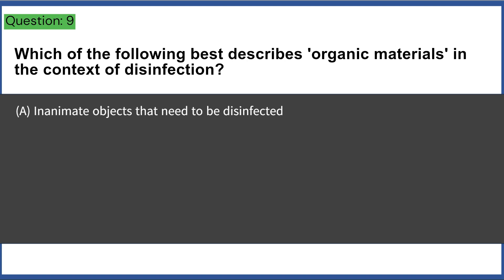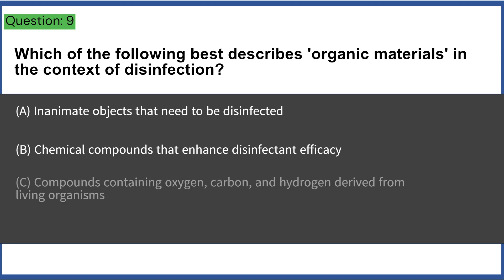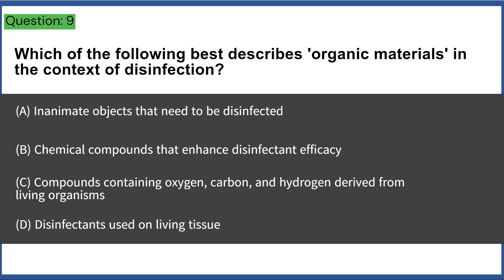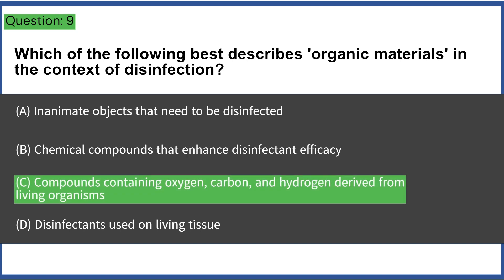Which of the following best describes organic materials in the context of disinfection? a) inanimate objects that need to be disinfected, b) chemical compounds that enhance disinfectant efficacy, c) compounds containing oxygen, carbon, and hydrogen derived from living organisms, d) disinfectants used on living tissue. Answer: C, compounds containing oxygen, carbon, and hydrogen derived from living organisms.